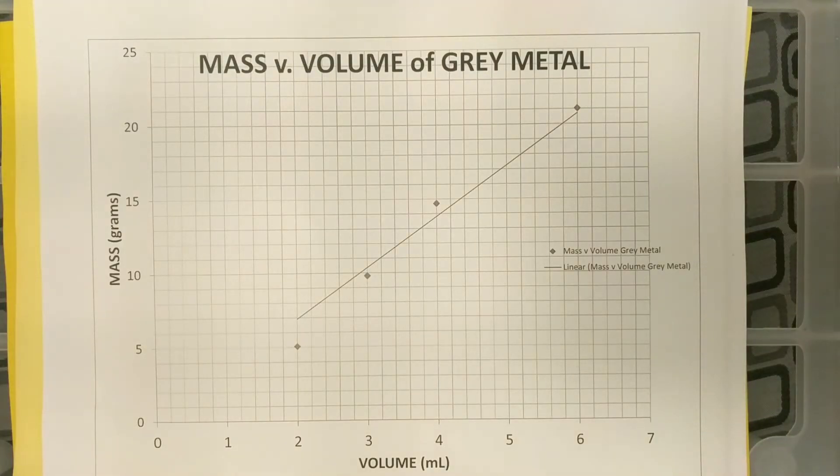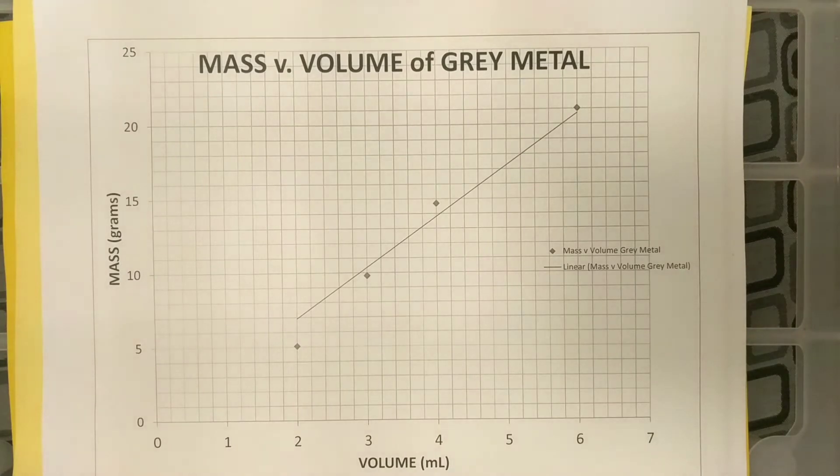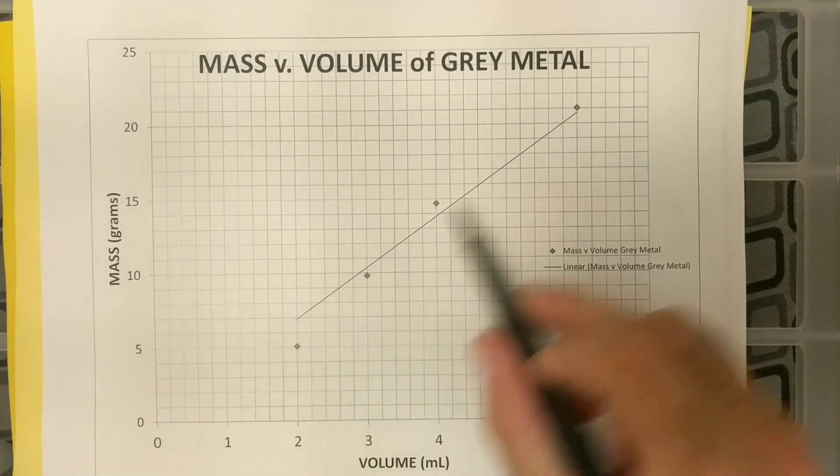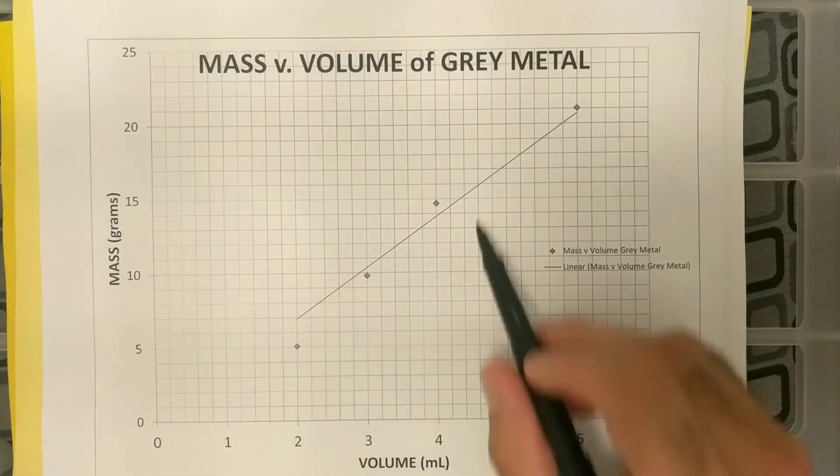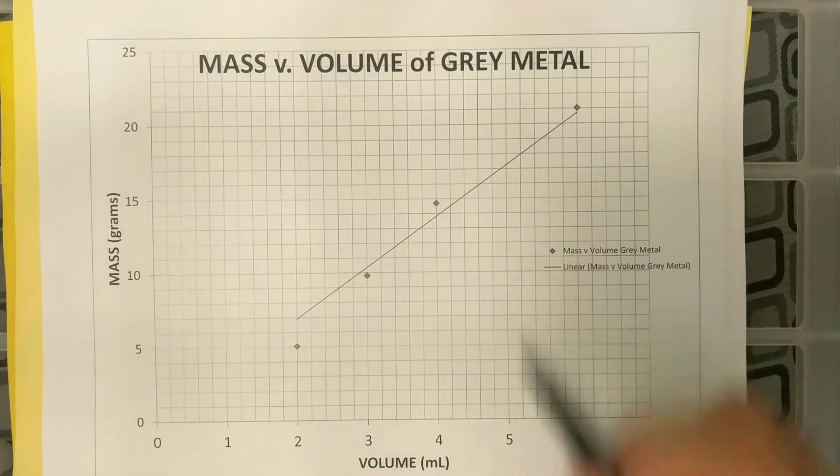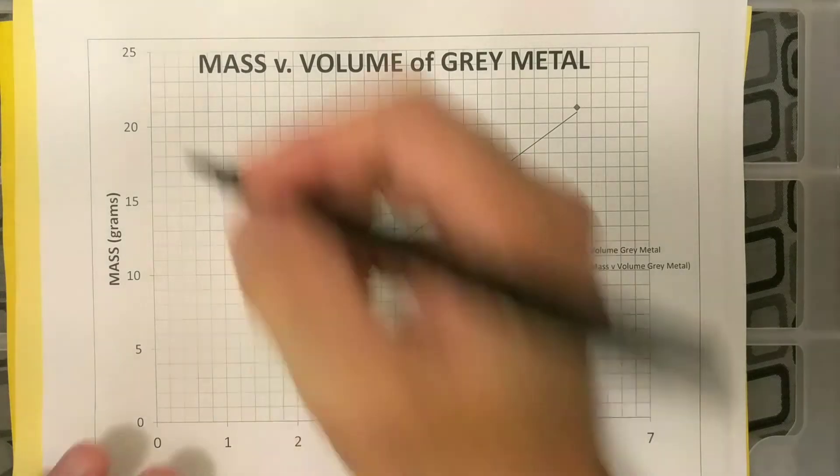All right, hey, Honors Chemistry. I wanted to provide a brief video on how you could calculate the slope given a line. So this was our mass versus volume of gray metal graph, but we're not going to use the data points. We're going to use our trend line because we know that that trend line goes through zero. So I'm going to try and find two points on this trend line with data points that are in my x and y values and use that to calculate the slope.